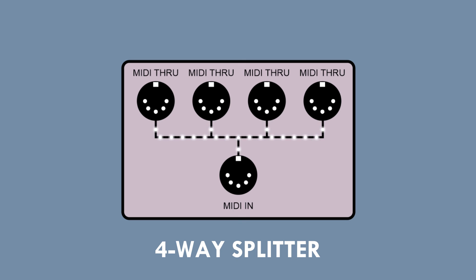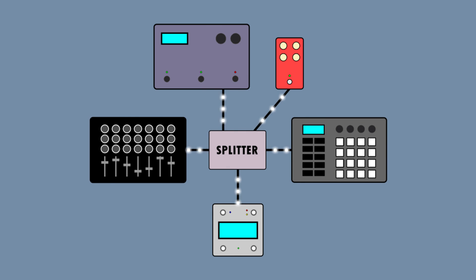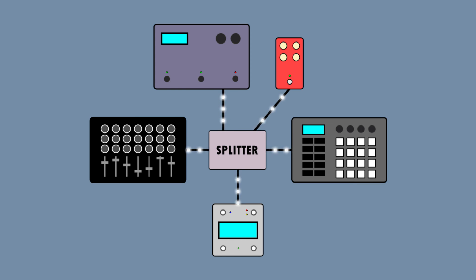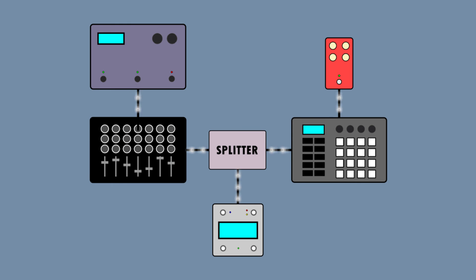Given what I've described about merging, the thing that most people do to solve it is to add a MIDI through box or splitter of some kind. Of course, the ability to do this depends on which devices need to send messages to which other devices — it's not always practical to connect everything in a hub-and-spoke fashion. But if you can identify places where adding a splitter makes the most sense, sometimes eliminating just one merge makes all the difference.